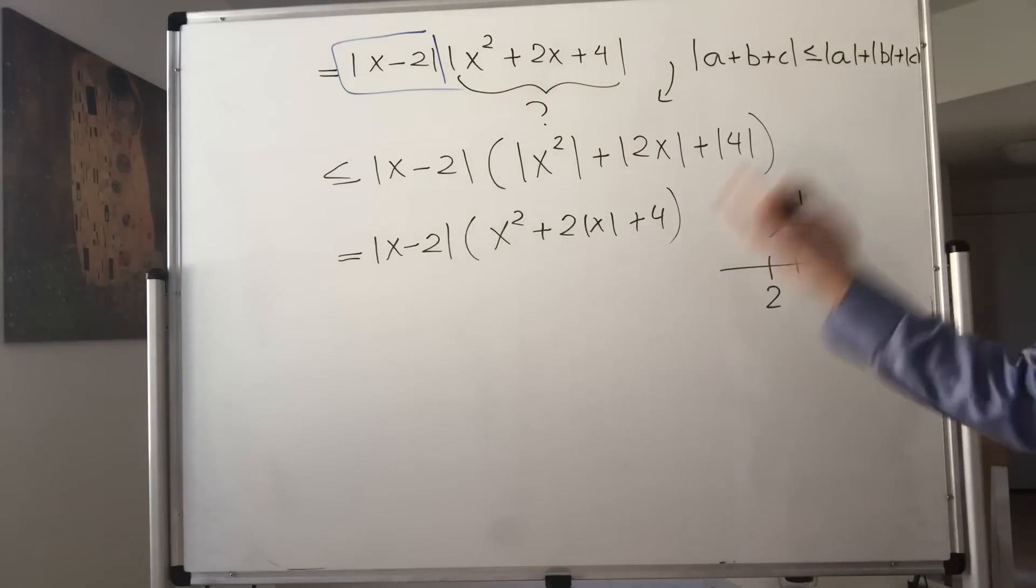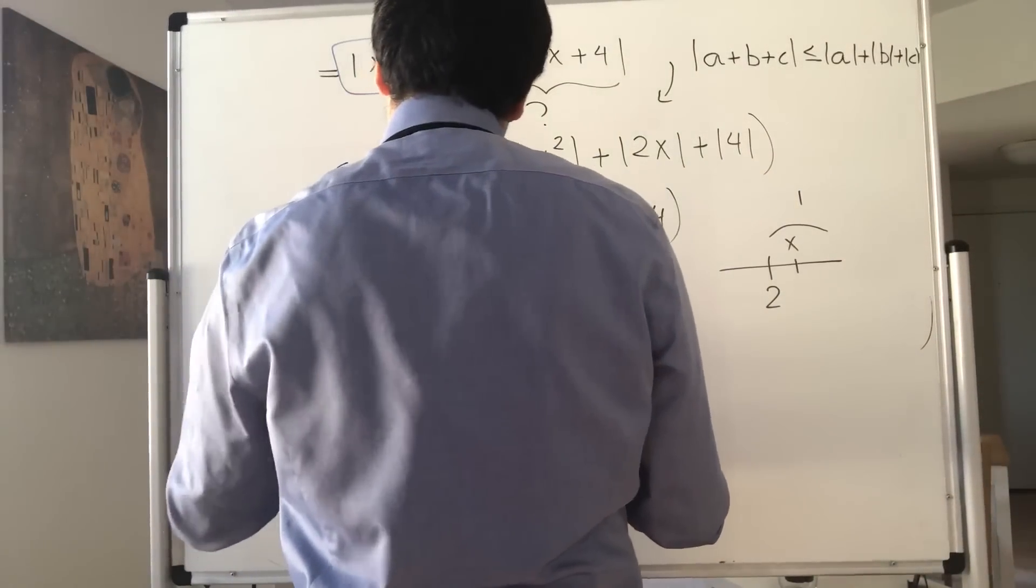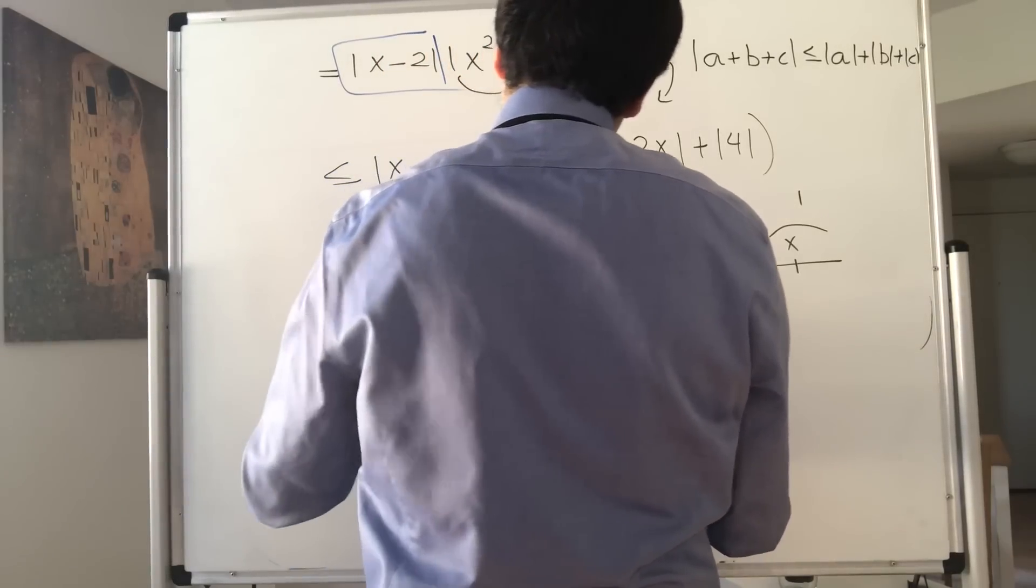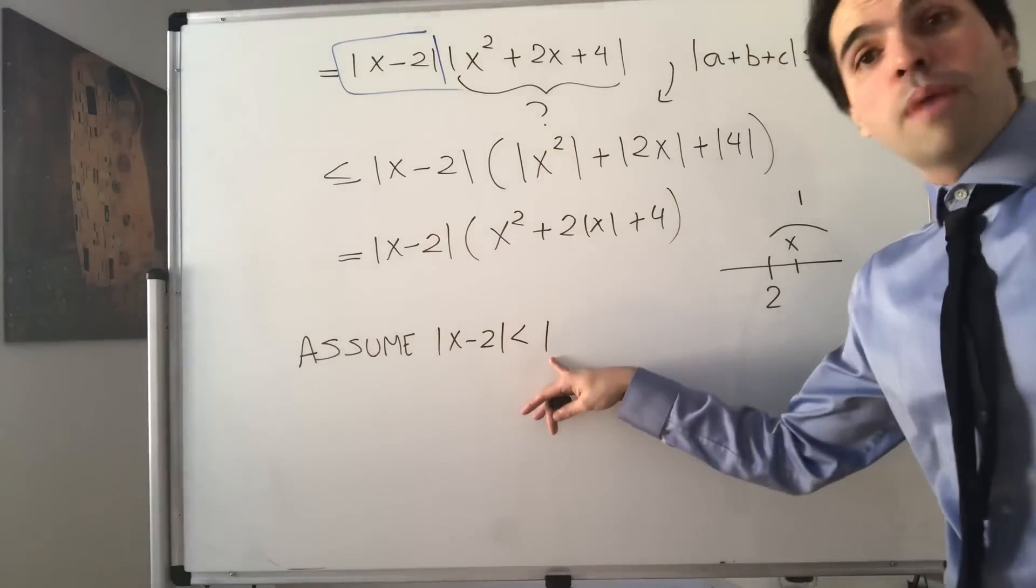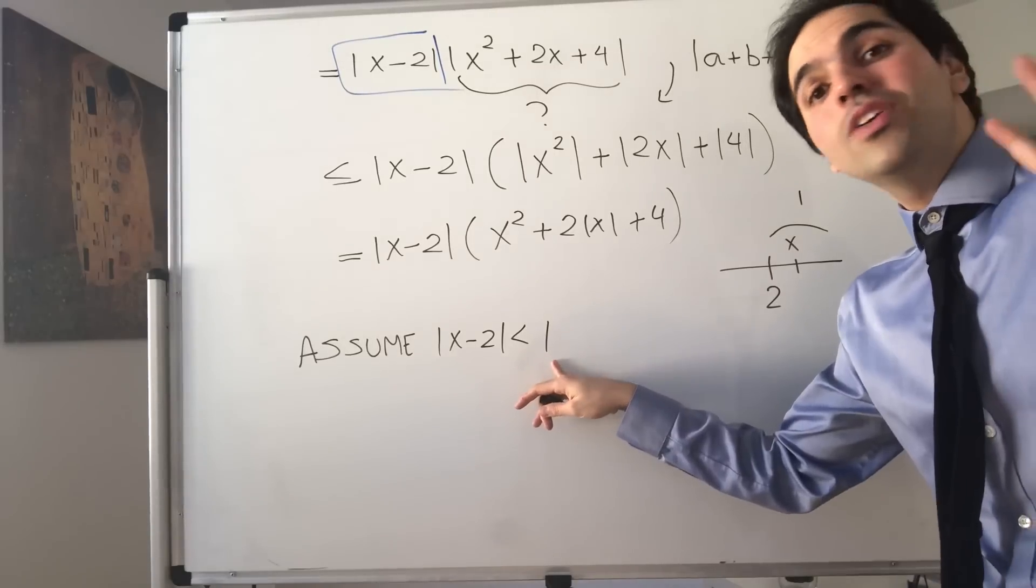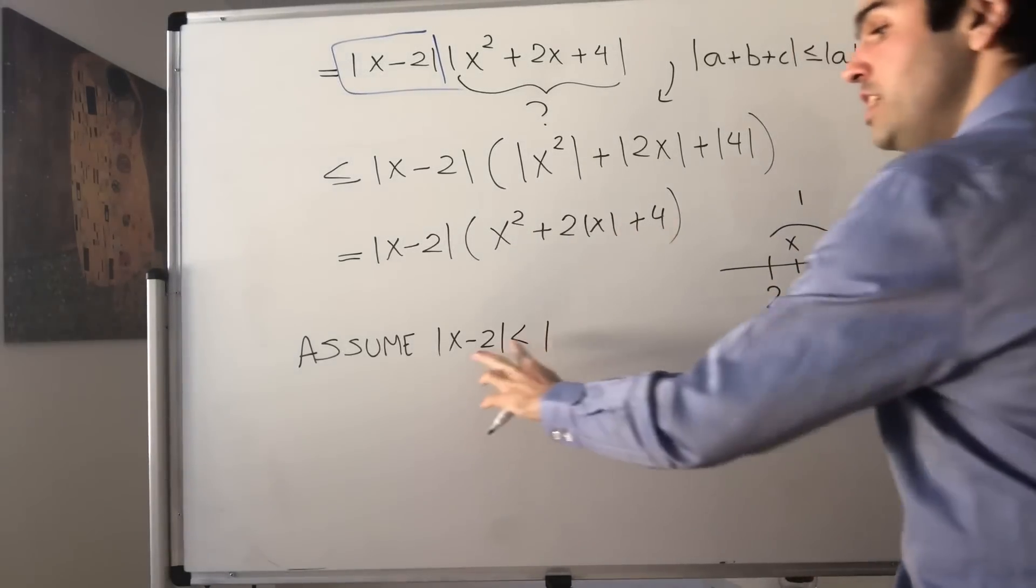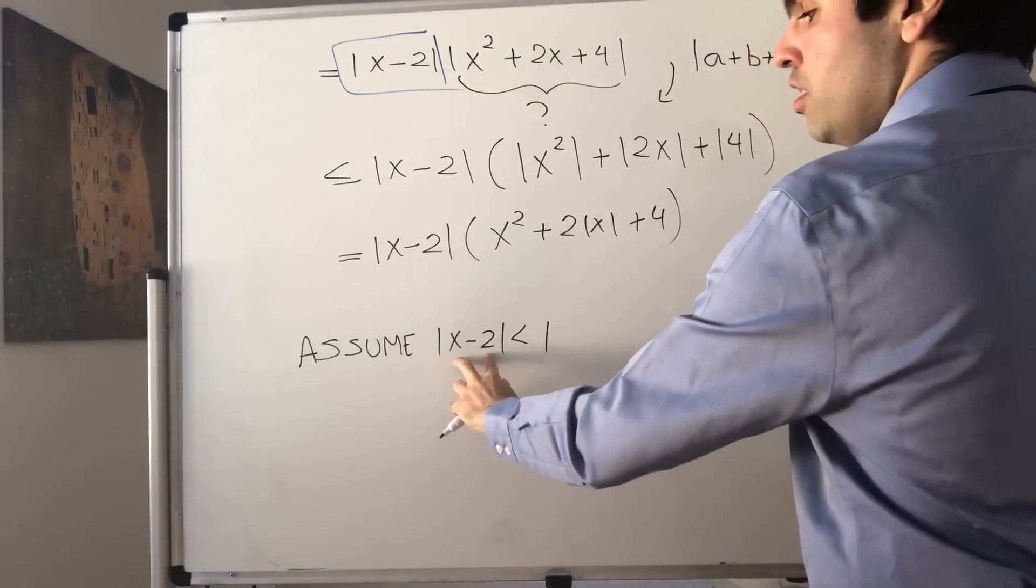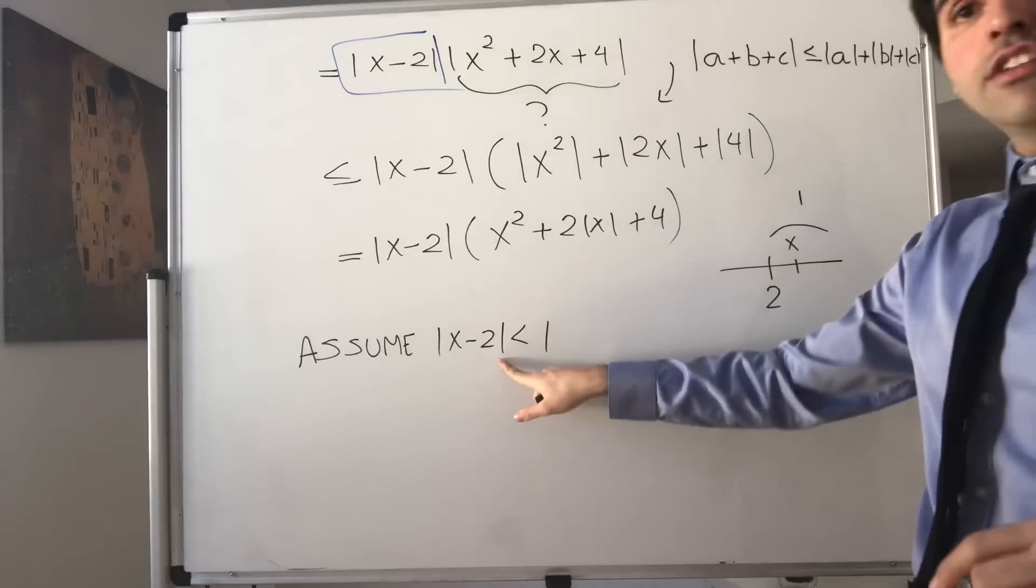In particular, let's see what happens if we assume that x minus 2 is less than 1. There's nothing special about the number 1. You could have chosen 2 or 3 or 10. All that we need is just a finite number that x minus 2 is close to. But then this gives us info about x.